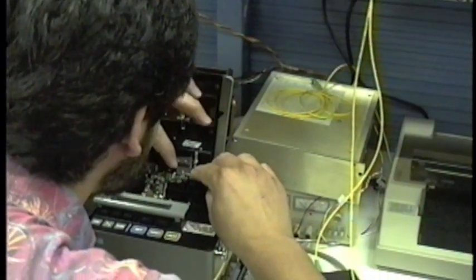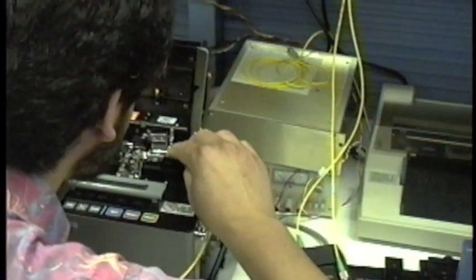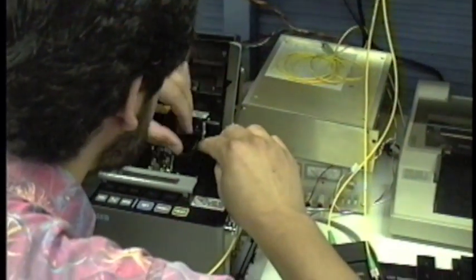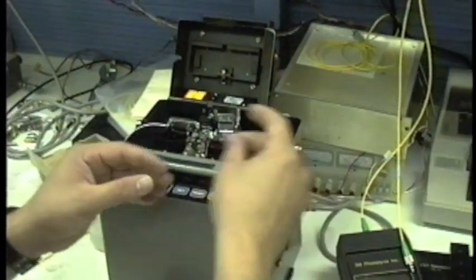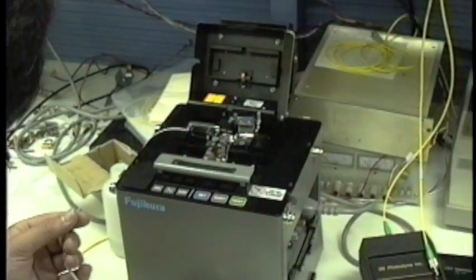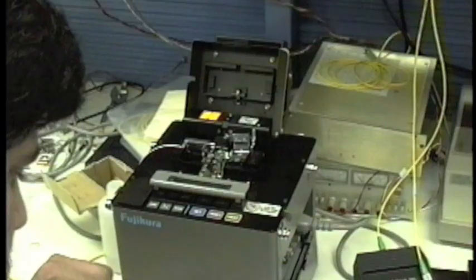It just splices. Connectors are a whole other ballgame. We don't even deal with them. But to really do them correctly, Rex is inserting the second fiber into the fuser. With multi-mode, no big deal. We really don't care because the core is so big.